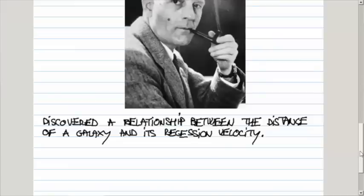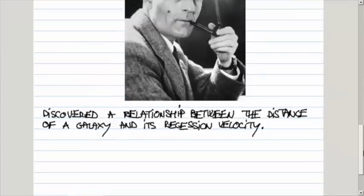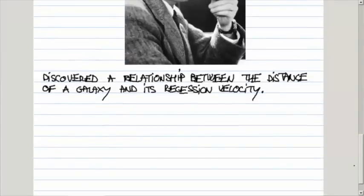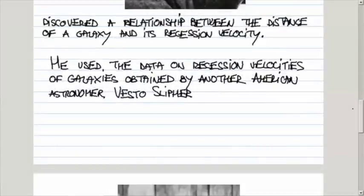Basically, what he did, he used the data on recession velocities obtained by another American astronomer, Vesto Slipher, who measured the shift of the spectral lines of the light coming from various galaxies. Assuming that shift in wavelength results from the Doppler effect, he was able to determine their recession speed.